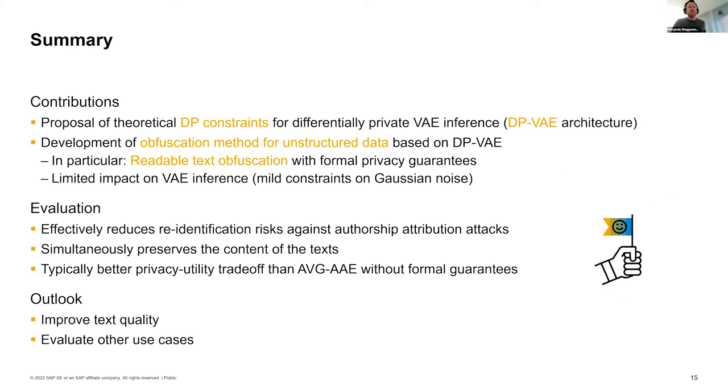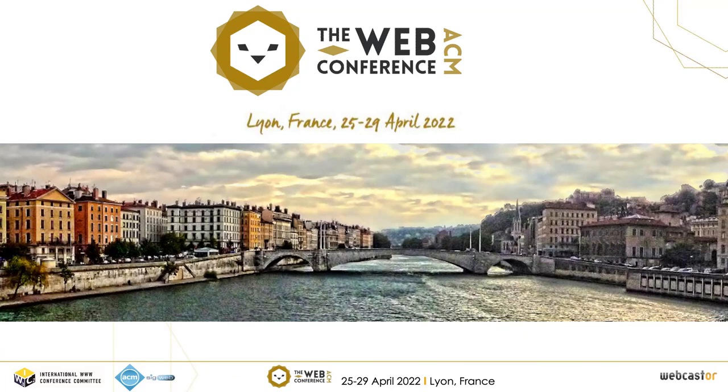To summarize, we proposed DP constraints that lead to our differentially private variational autoencoder architecture. This allows developing obfuscation methods for unstructured data. Here, we did this in the example of textual data to get readable text obfuscation with differential privacy guarantees. We saw that it effectively can reduce re-identification risks while preserving the content. It's typically a slightly better trade-off than the adversarial autoencoder by John et al. Thanks for bearing with me so long. If you have any questions, please ask. Thank you.